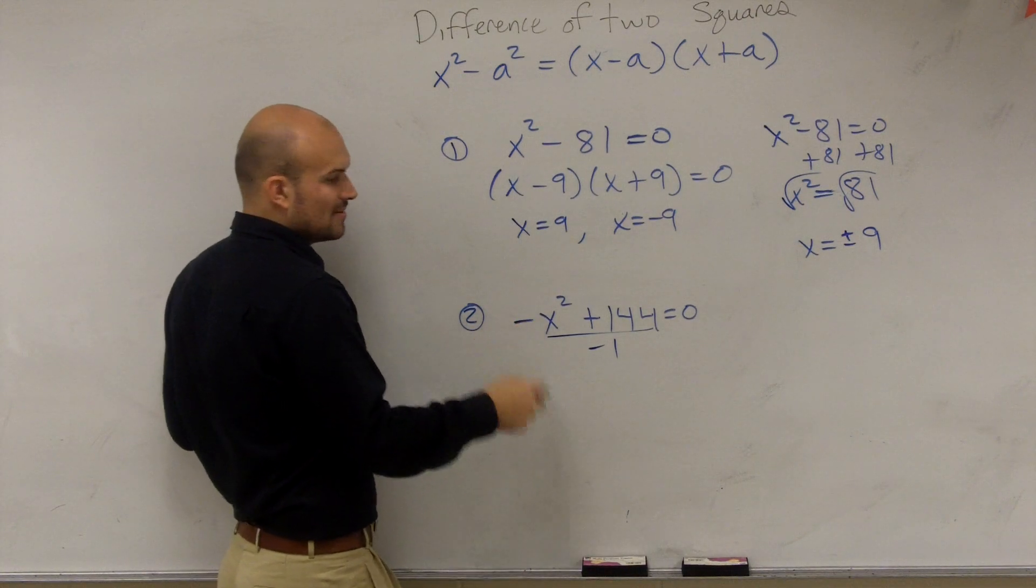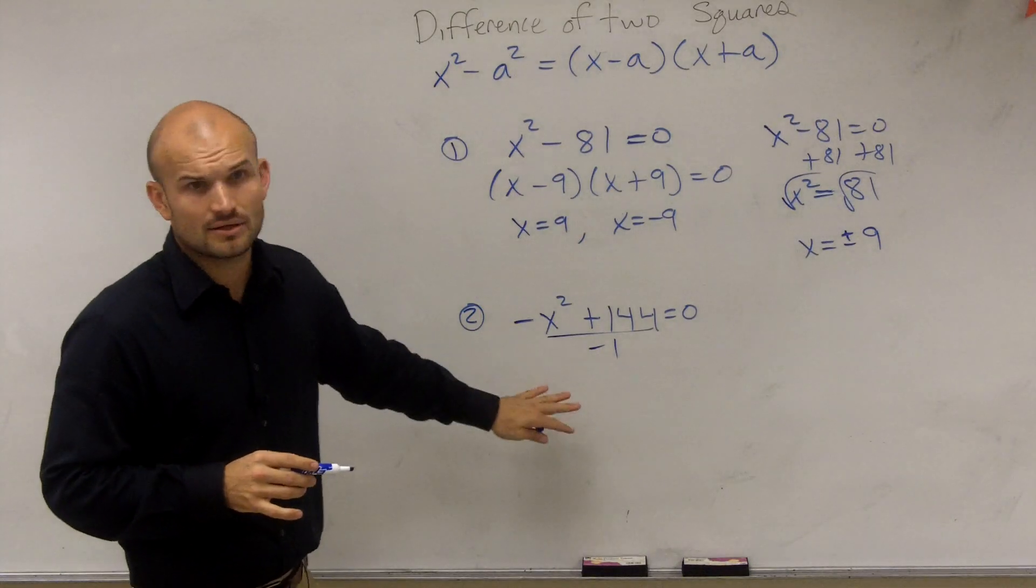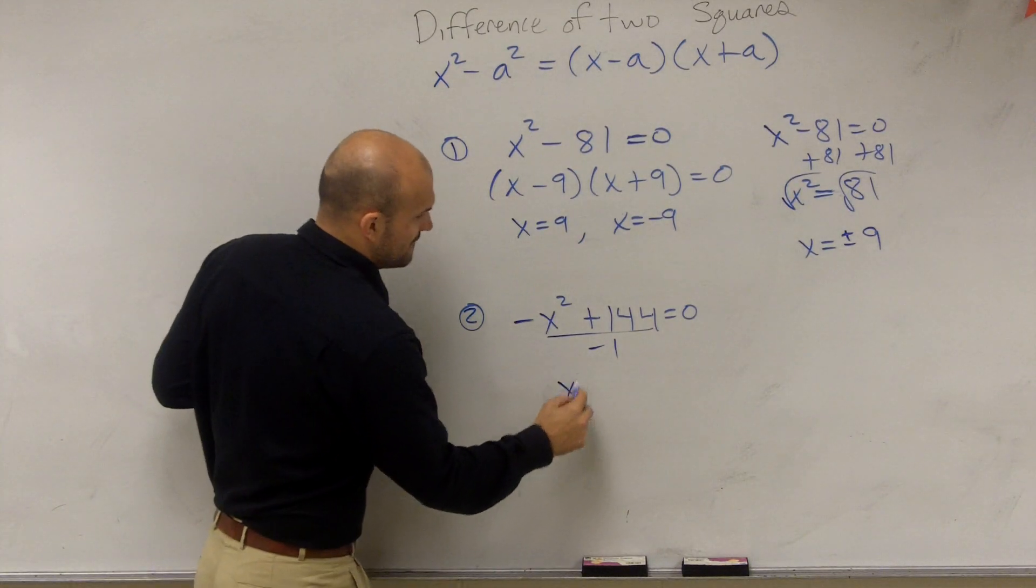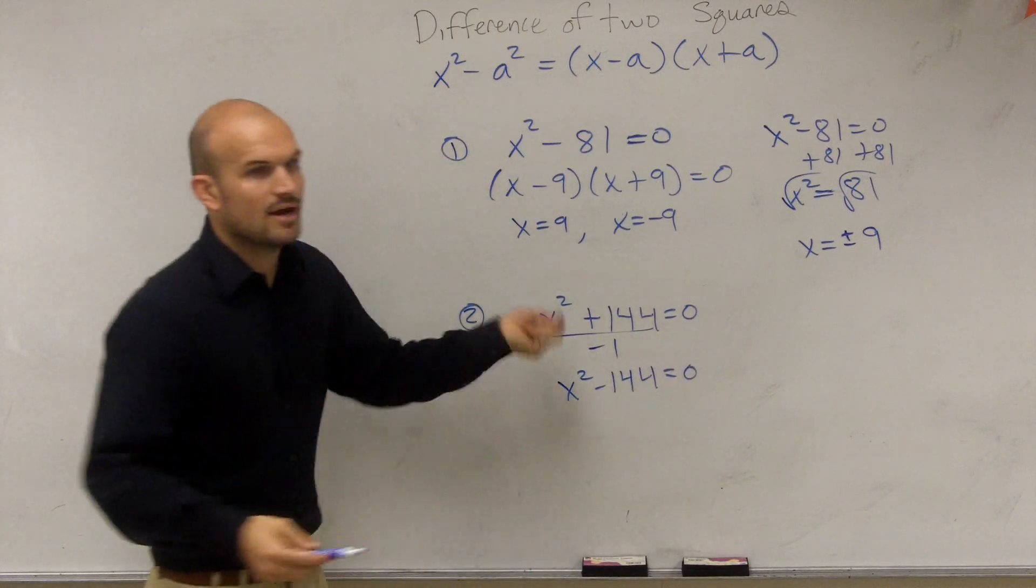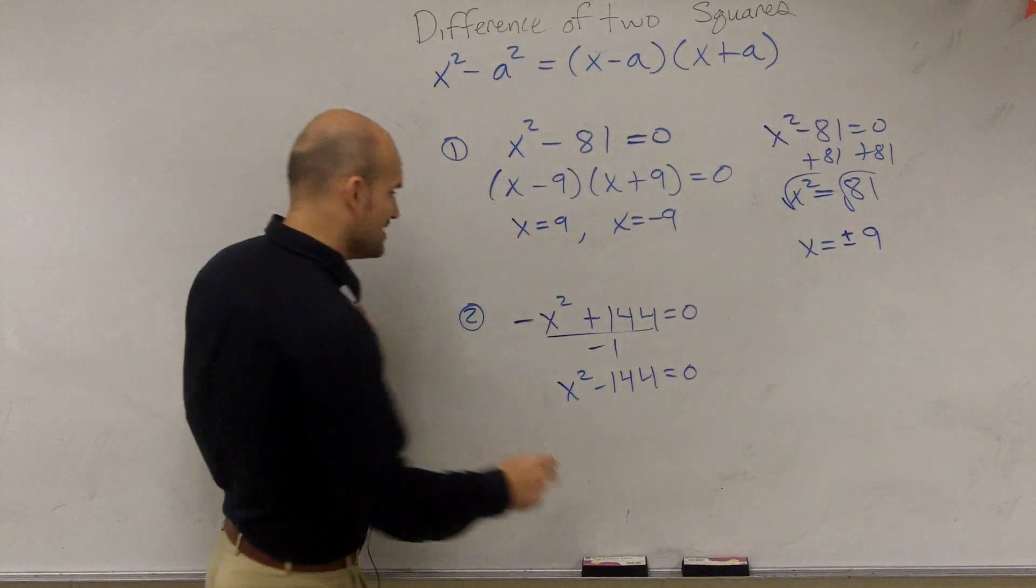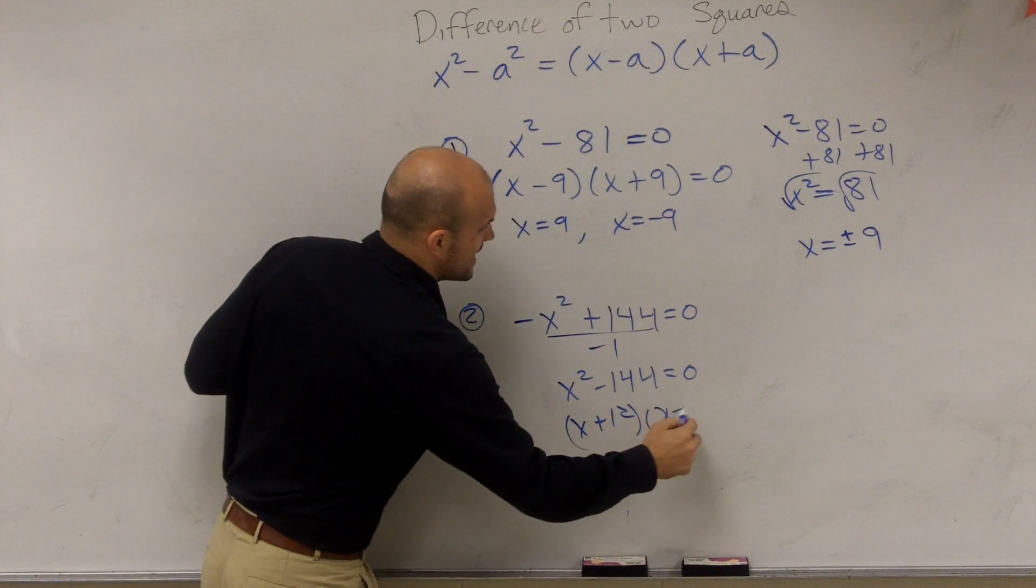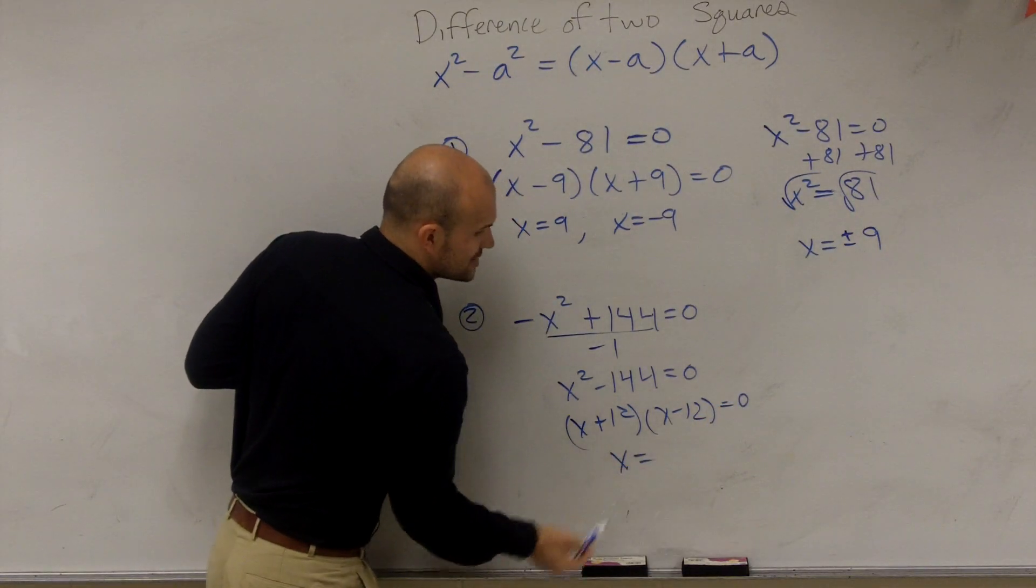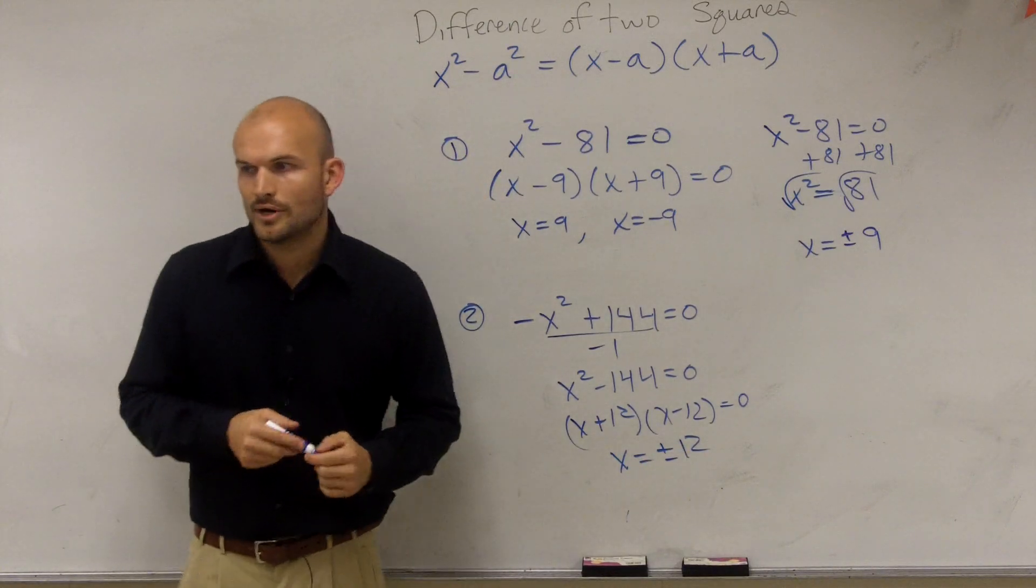Because we always want this term in front of your quadratic term, we always want that to be positive. So you want to write this down. So therefore, you have x² minus 144 equals 0. Now 144, is that a square number? I bet so. So it's x plus 12 times x minus 12 equals 0. Therefore, your solutions to your problem are x equals plus or minus 12.